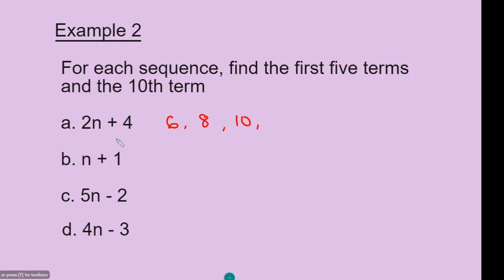To find the fourth number, n equals 4: 2 times 4 is 8, plus 4 is 12. To find the fifth number, n equals 5: 2 times 5 is 10, add 4 is 14. Now to find the tenth term, n equals 10: 2 times 10 is 20, plus 4 is 24.